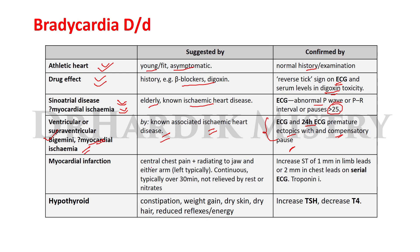When bradycardia occurs with central chest pain radiating to the jaw and either arm — specifically the left arm — with continuous pain typically over 30 minutes not relieved by rest or nitrates, and ECG shows ST elevation of 1 mm in limb leads or 2 mm in chest leads on serial ECG, along with an increase in troponin I level, then this is suggestive of myocardial infarction.